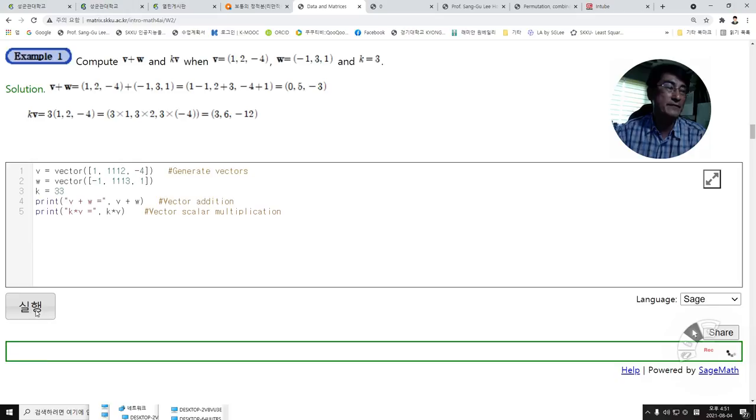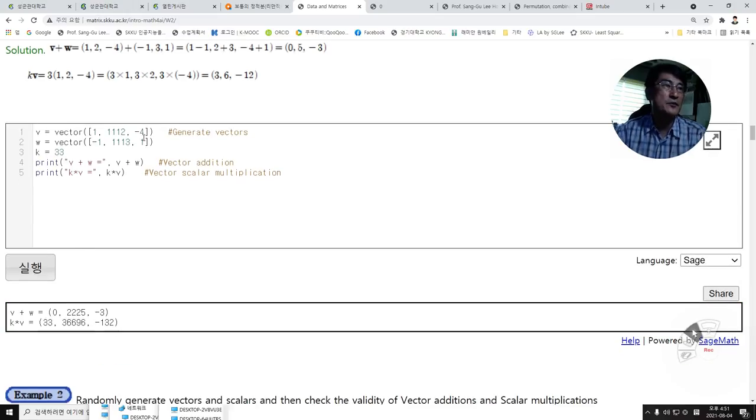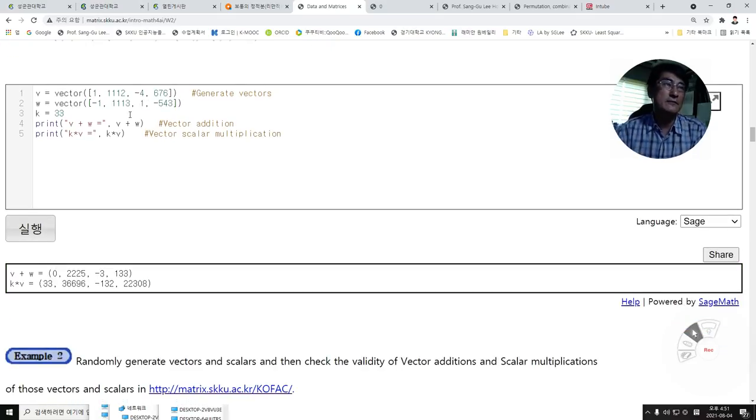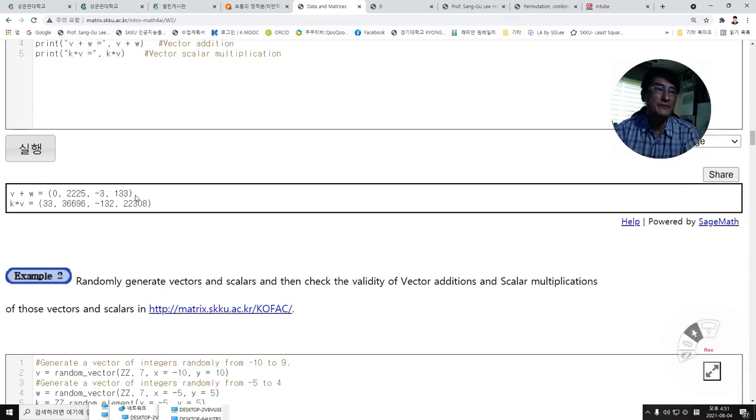If we change these vectors or scalar, then we will have the result for those given vectors. If we have four-dimensional vectors like this, it will do the same computation for four-dimensional vectors.